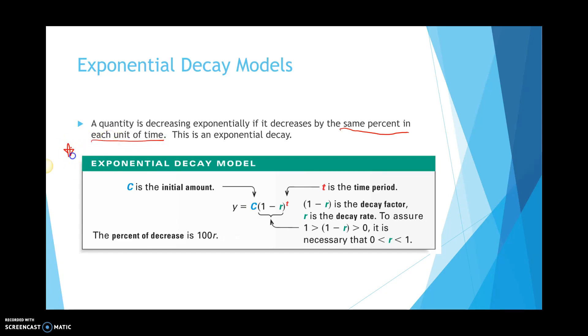And so here is our formula for exponential decay. It's very similar to exponential growth. The only difference is when you have the 1 and the rate, you're subtracting with decay, whereas growth you add. So, your formula here, y equals c.